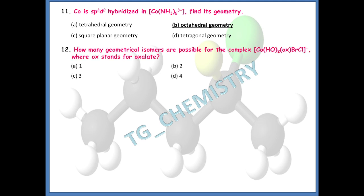How many geometrical isomers are possible for the complex [Co(H2O)(ox)(Br)(Cl)]⁻, where ox is the oxalate group? The right answer is four — option D. Four geometrical isomers are possible for this complex.